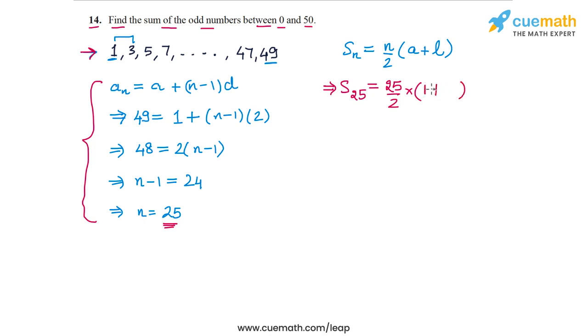A is 1 and L is 49, the last odd number. So we get (25/2) into (1 plus 49) is 50. Let's divide 50 by 2, we get 25. So we get 25 into 25, or 25 squared, or 625.